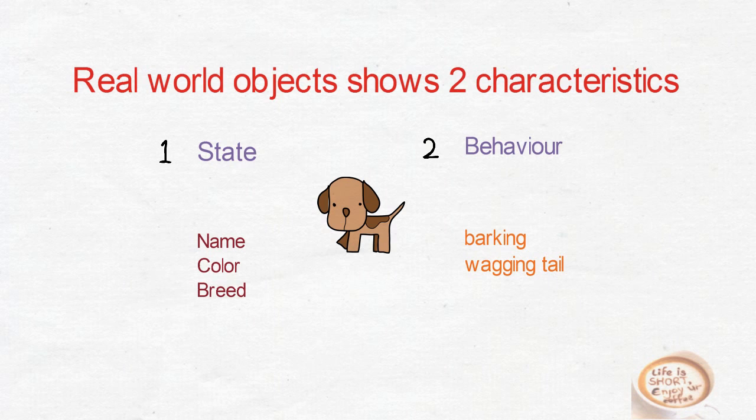For every real world object you can ask two questions. What possible states can this object be in? Number two, what possible behavior can this object perform?